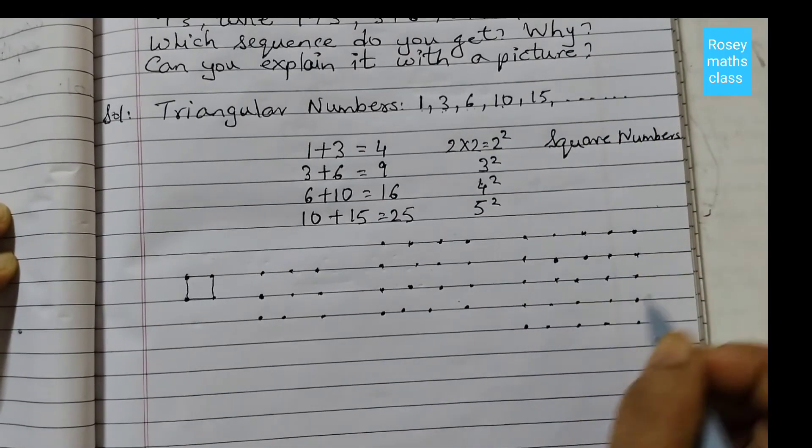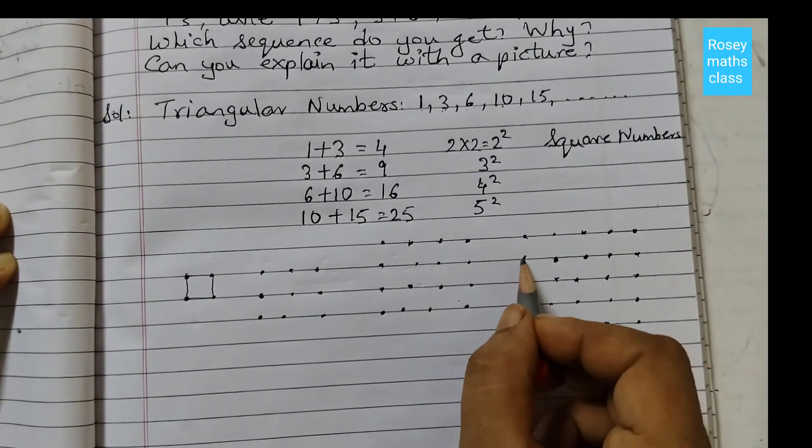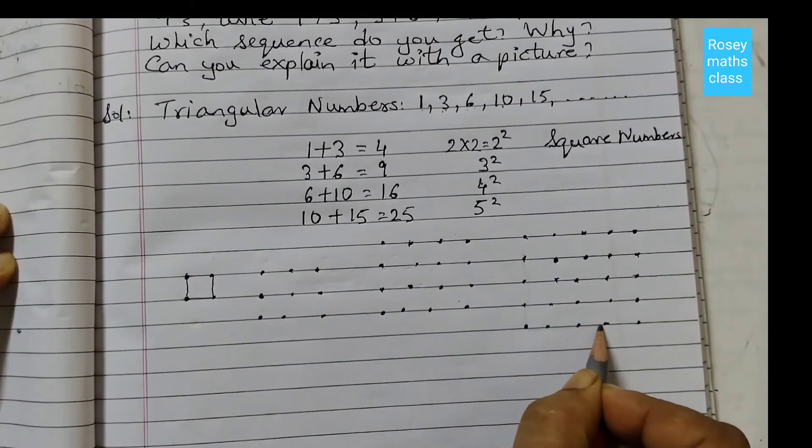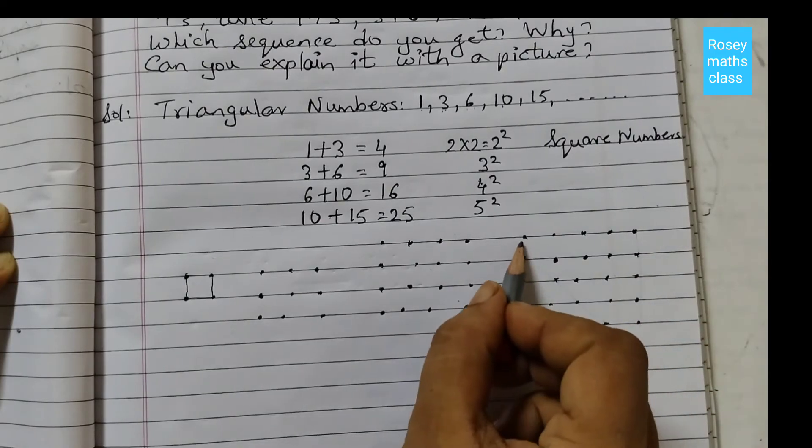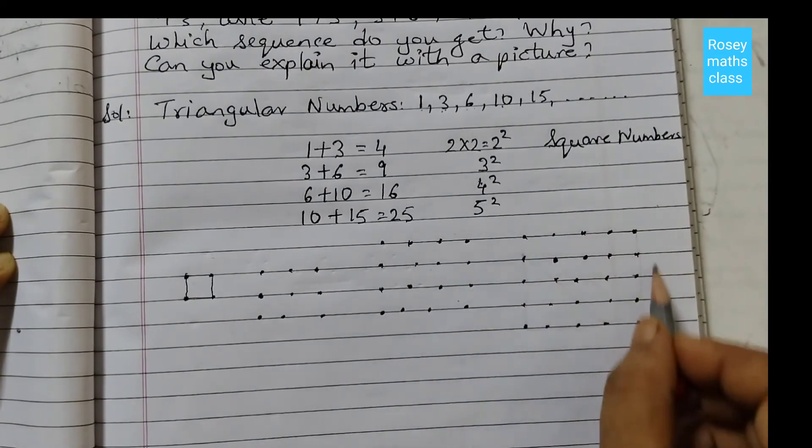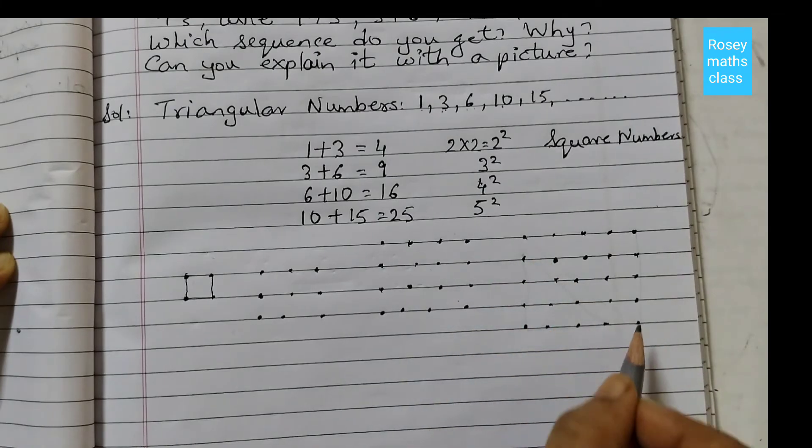15 dots. So here we have 10 dots showing one triangular number, and then here we have 15 dots showing another triangular number. When we join this whole thing, we will get a square, and that is 5 squared.